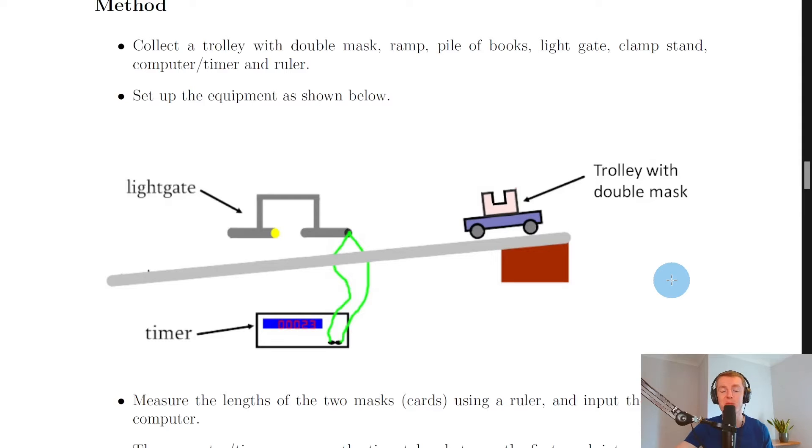You'll see this is almost the exact same setup that you would use to measure instantaneous speed. However, there's one main difference and this difference is the mask that we're using on the trolley. This time, instead of just a single card or mask, we're using a double mask which means it's got two parts separated by a gap that's going to cut through the light gate. We'll then get a single light gate connected to a TSA timer, a ramp propped up by a pile of books, and then you would also have a ruler.